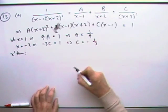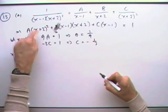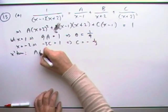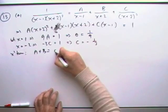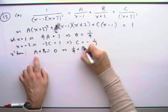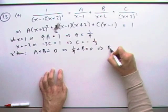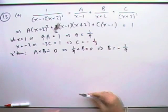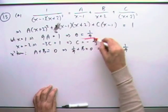Compare the x squared terms. So to make x squared, I've got an Ax squared and a Bx squared. So A plus B, and there's no x squared over there, must equal 0. But A was a ninth, which means B must be negative a ninth.